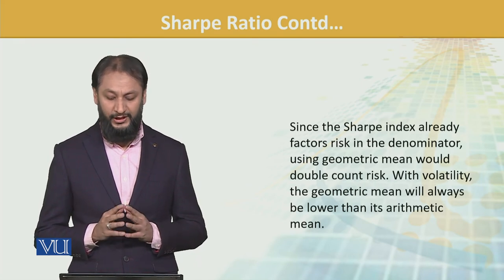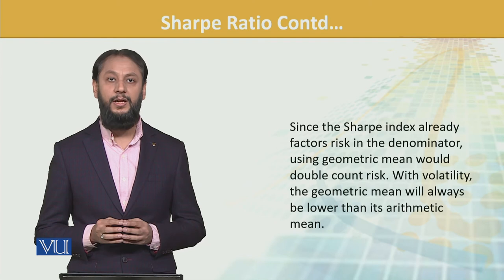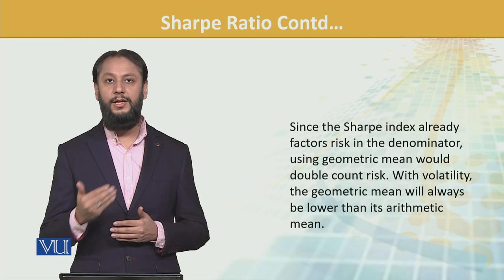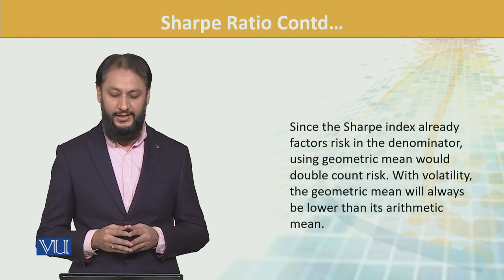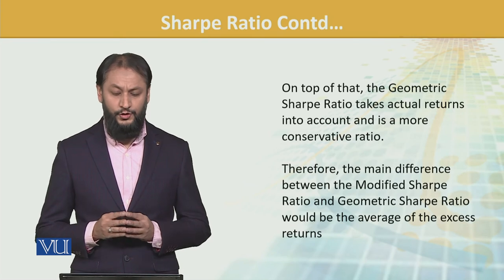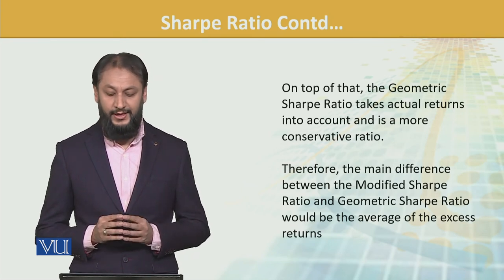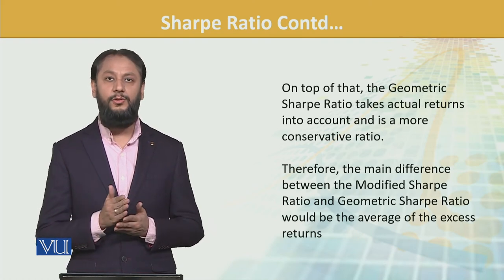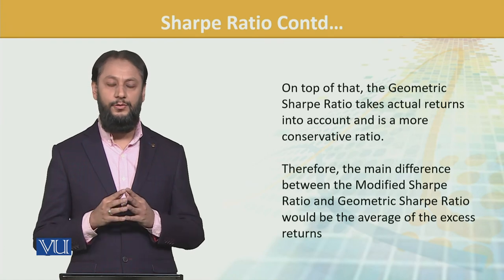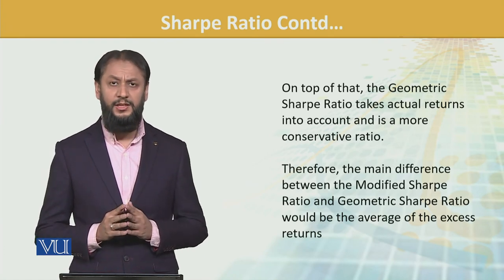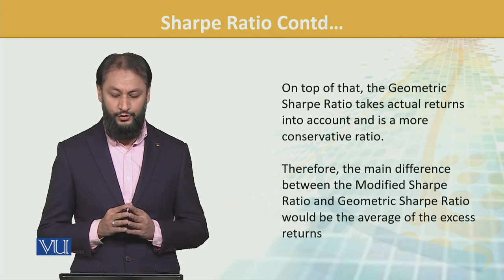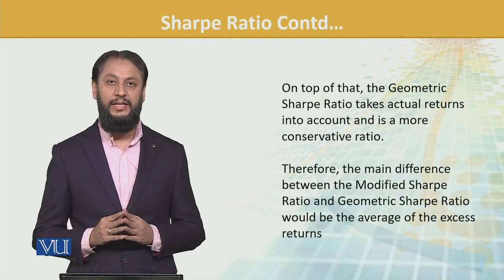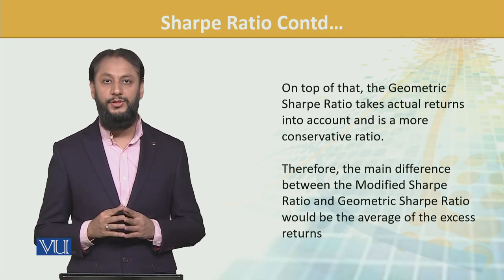With volatility, geometric mean will always be lower than arithmetic mean. हमें पता है कि geometric mean जब जाएंगे तो arithmetic से कम आएगा, क्योंके उसका compounding effect साथ आ जाता है. Geometric Sharpe ratio takes actual returns into account and is a more conservative ratio — थोड़ी prudent और conservative है. The main difference between modified Sharpe ratio and geometric is the average of the excess return — किस base पे returns की average calculate की है.